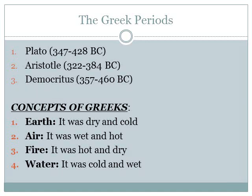Greek thinkers such as Plato (Aflato), Aristotle (Aristo), and Democritus first presented ideas about elements and atoms and their different properties. Their concept was: Earth — it was dry and cold; Air — it was wet and hot; Fire — it was hot and dry; Water — it was cold and wet.